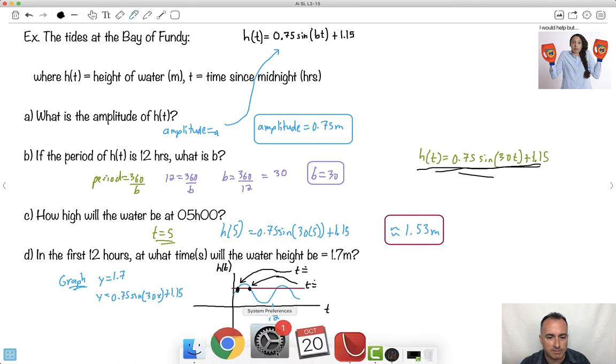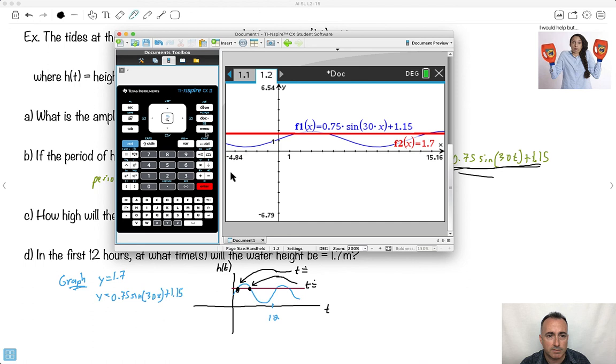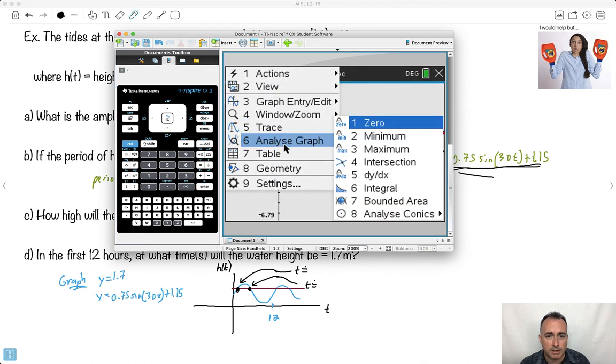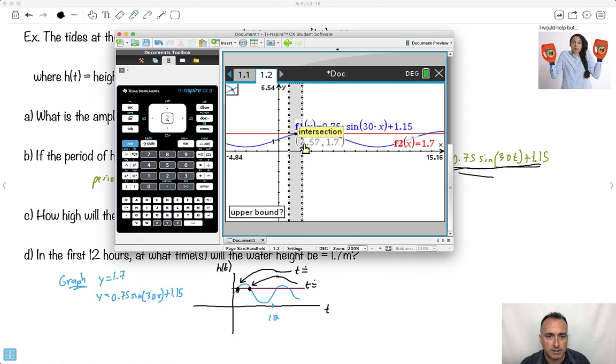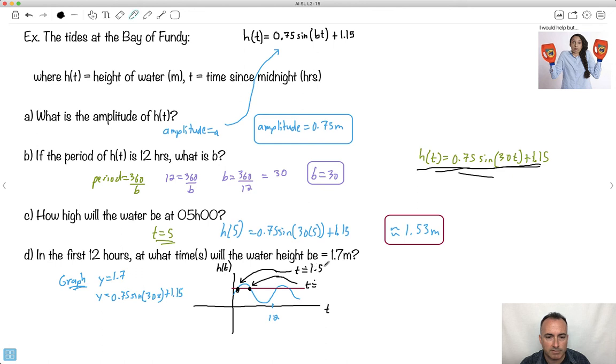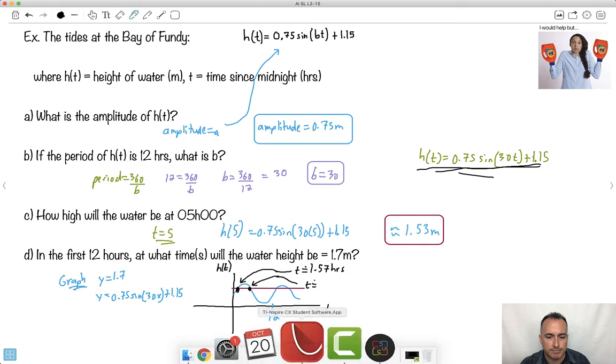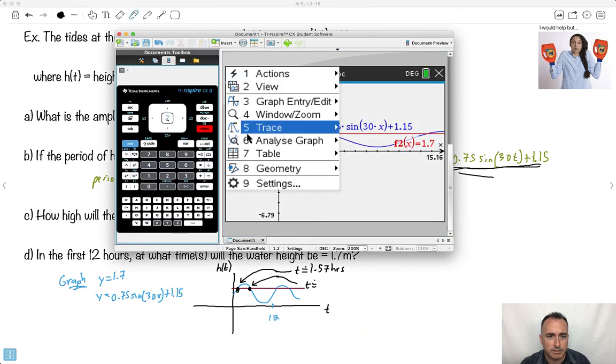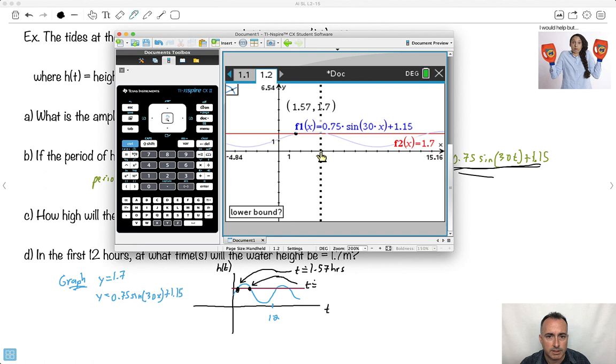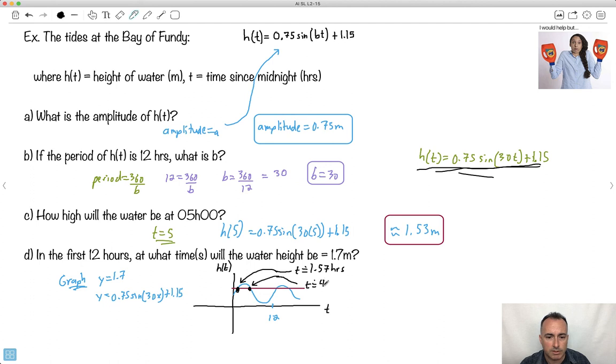The first one on the left: I'll do menu, analyze, and I'll say intersection. So it's 1.57. So it's roughly 1.57 hours. And the other one: I go to analyze, do intersection again, and it's 4.43 as my x value. So t is 4.43 hours.